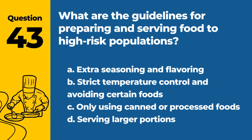Question 43. What are the guidelines for preparing and serving food to high-risk populations? a. Extra seasoning and flavoring. b. Strict temperature control and avoiding certain foods. c. Only using canned or processed foods. d. Serving larger portions. Answer: b. Strict temperature control and avoiding certain foods. High-risk populations, such as the elderly and immunocompromised, require careful food safety practices.